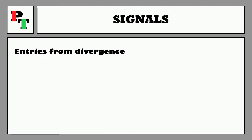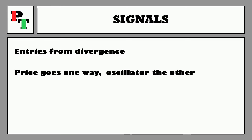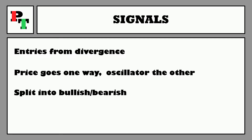There are more signals to come — we're jumping back to reversal-style entries with the ever powerful divergence. Divergence is when price goes one way but the oscillator goes the other. Bullish divergence is when price goes down between two troughs but the MFI goes up over those same two points. Bearish divergence is the opposite: price goes up between two peaks while the MFI goes down.